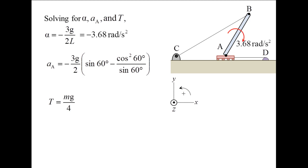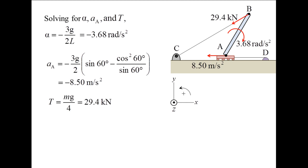The slab's angular acceleration is 3.68 radians per second squared in the clockwise direction. The acceleration of point A is 8.5 meters per second squared to the left. And the tension in the cable is 29.4 kilonewtons.